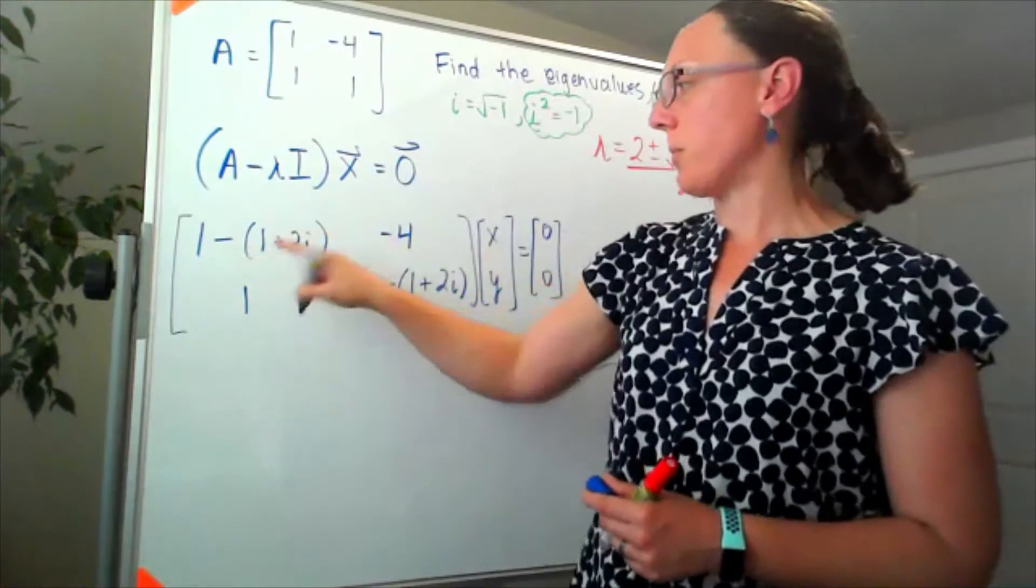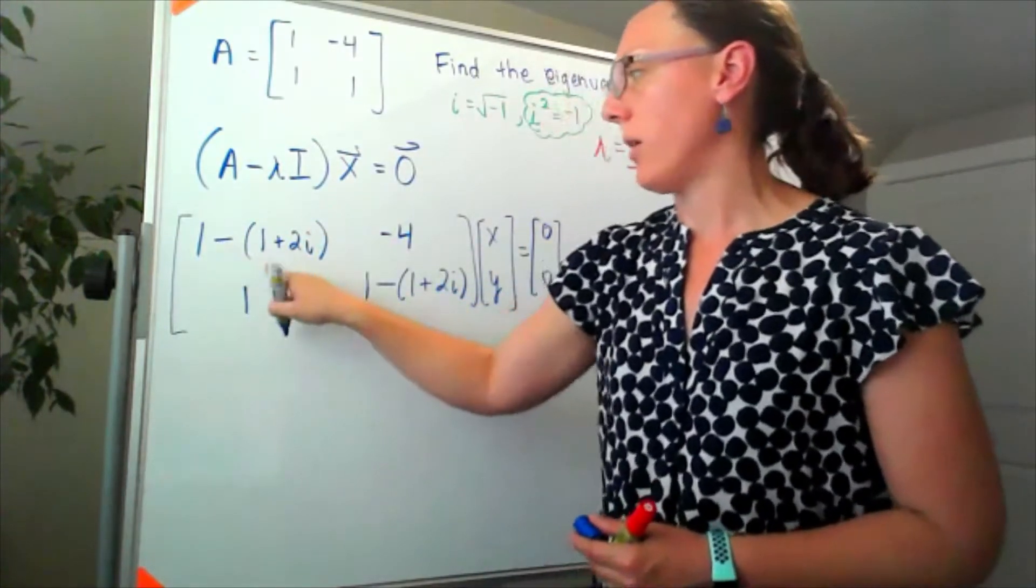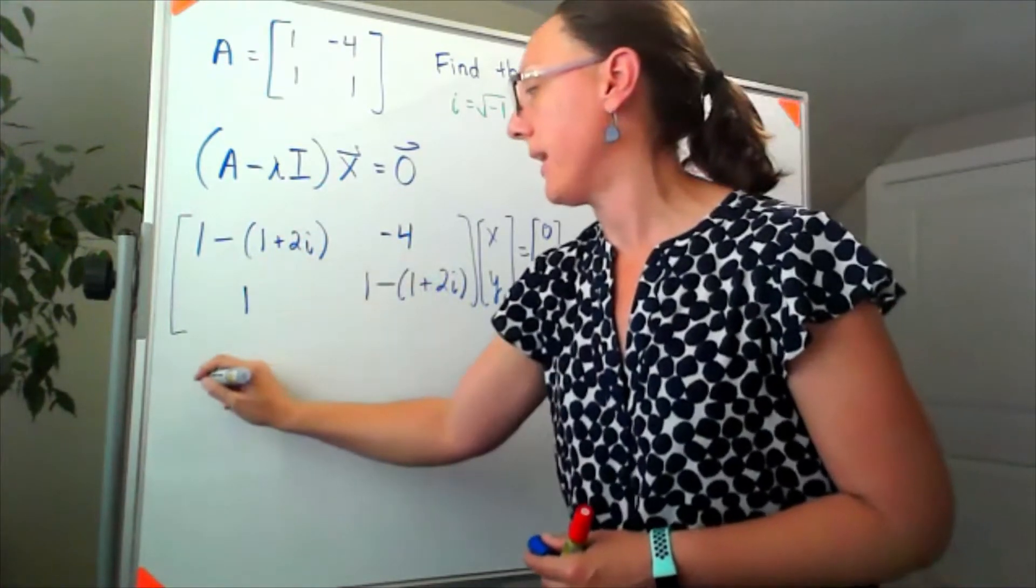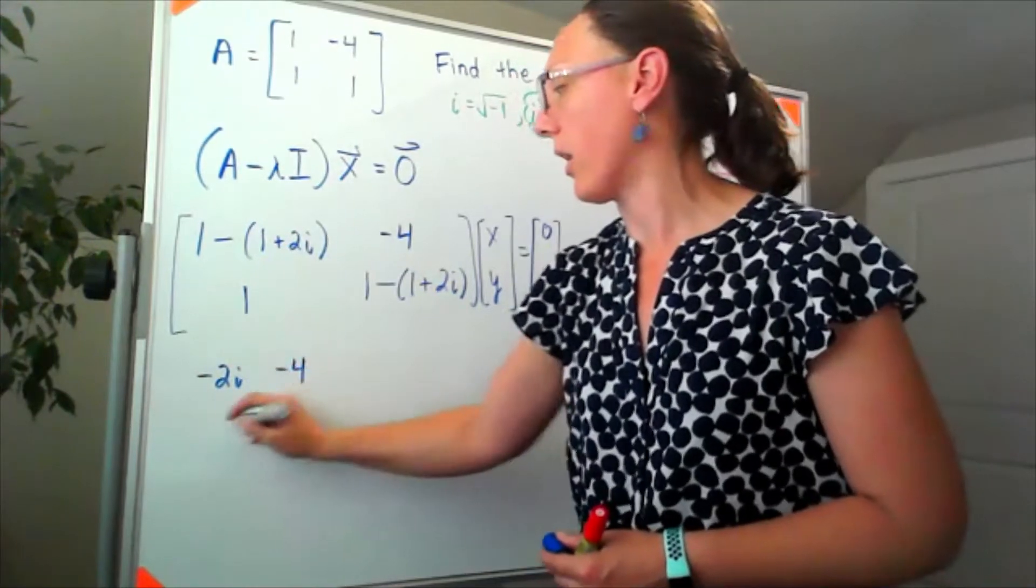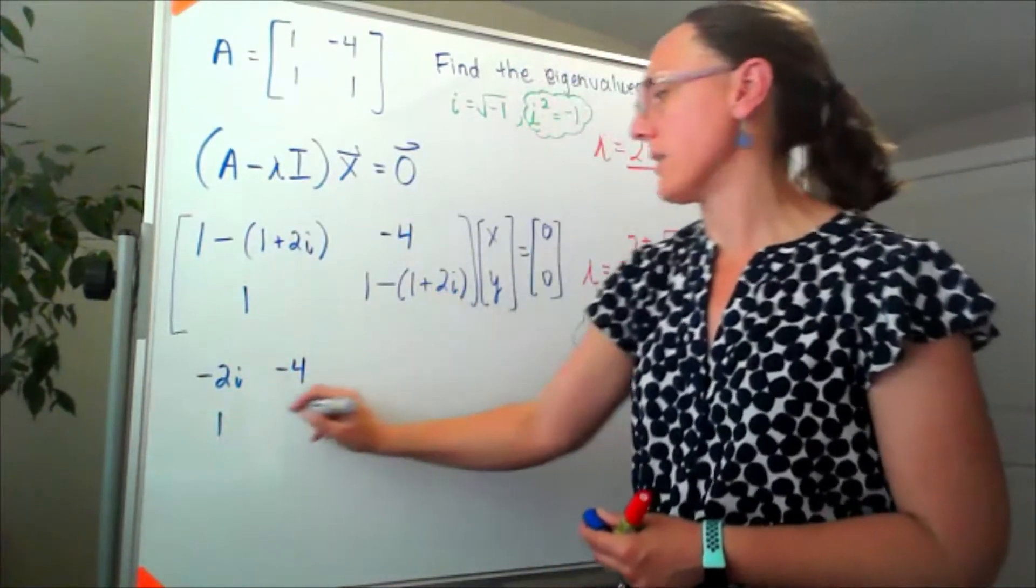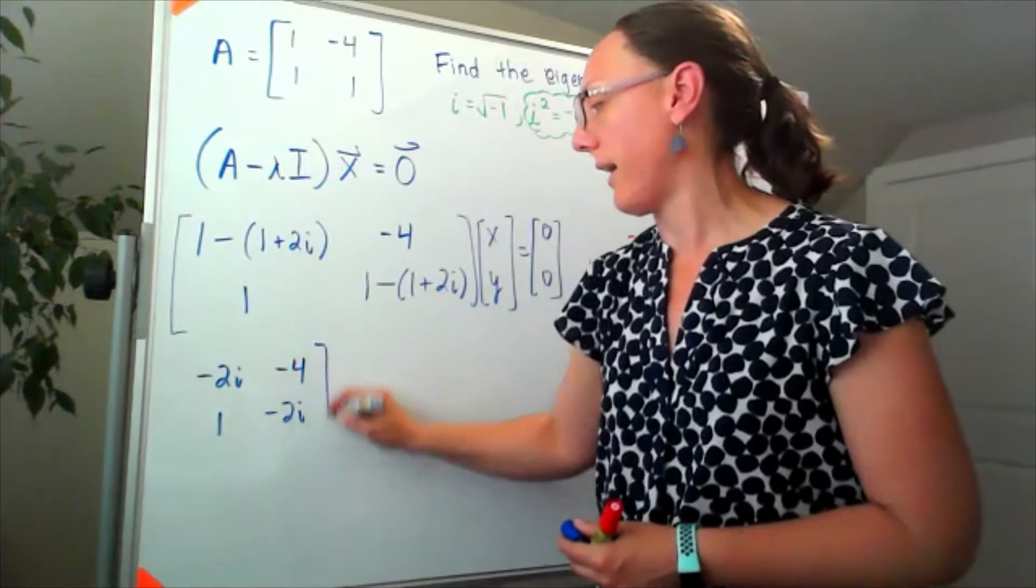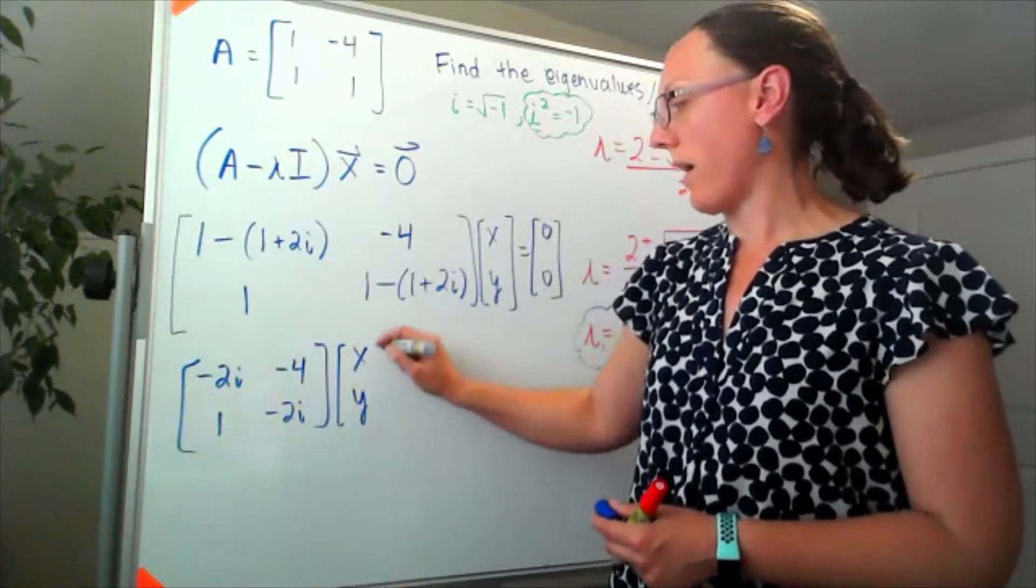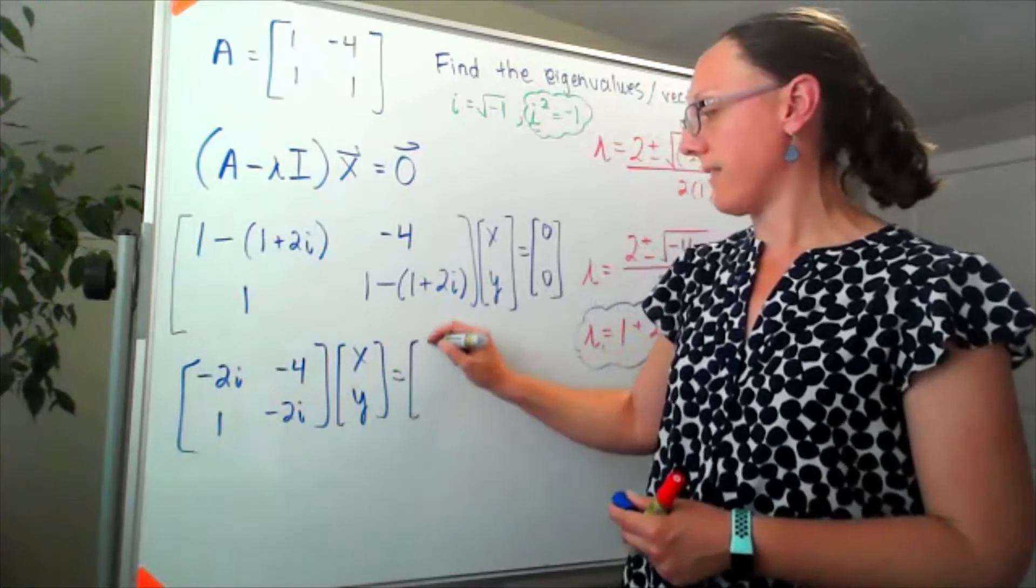Cleaning this up, distributing that minus sign in, 1 minus 1 well those are gone, so now I've got negative 2i, negative 4, 1, and negative 2i, multiplying that by my x y vector to get the zero vector.